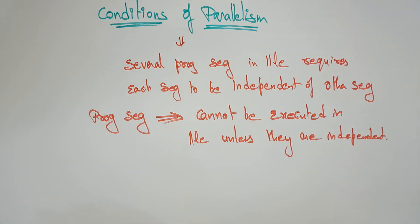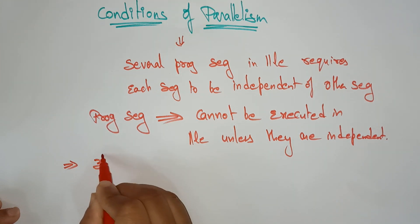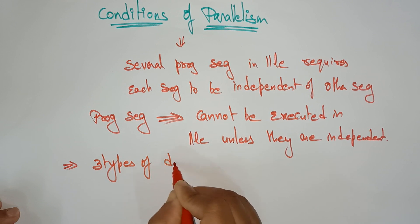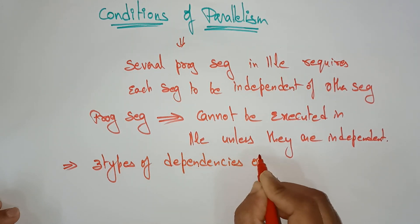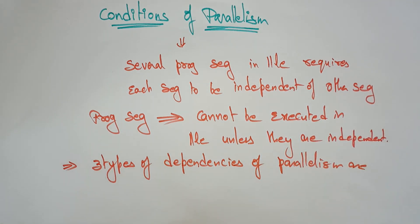If you talk about independence, it comes in several ways, several forms. There are so many forms when talking about independence. But coming to the dependency of parallelism, to describe the relationship between the statements, we obviously need a dependency graph. Whenever we have a dependency graph, then only we can describe the relation between each statement.